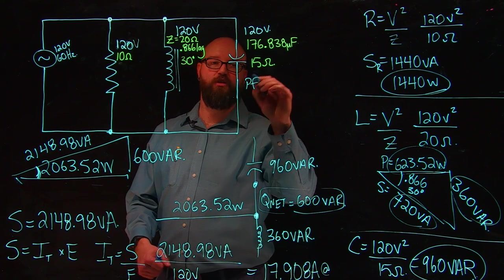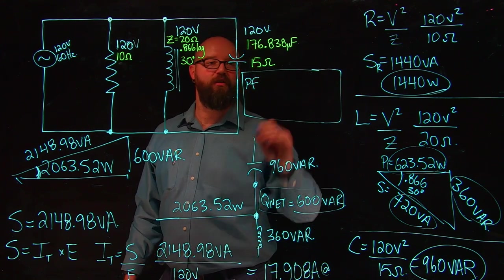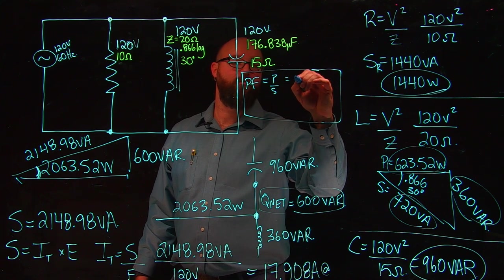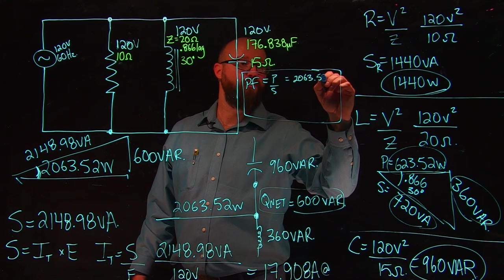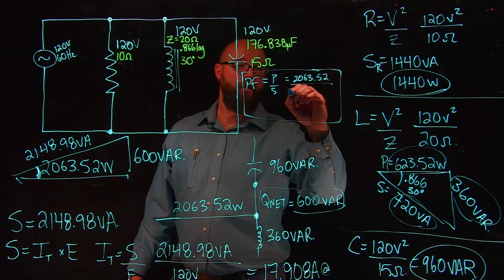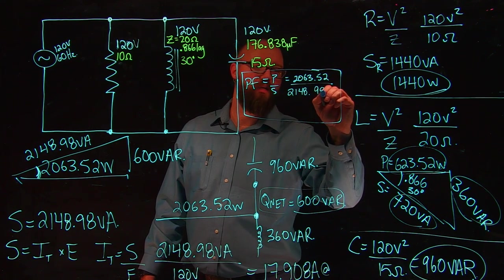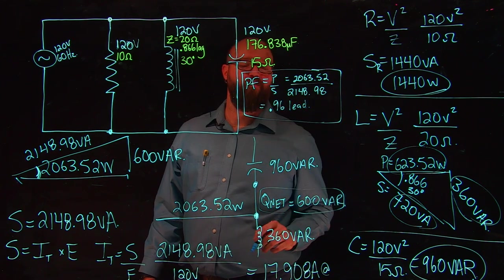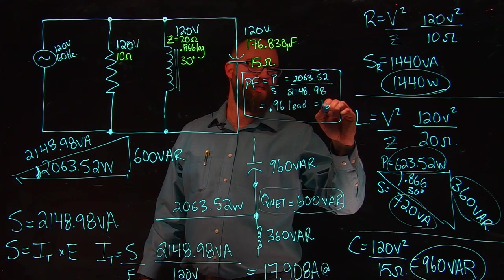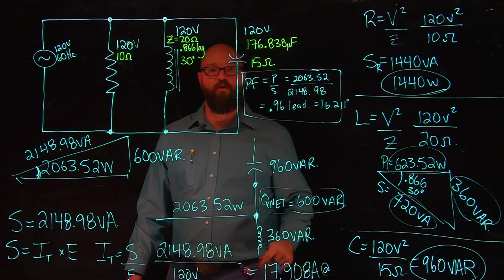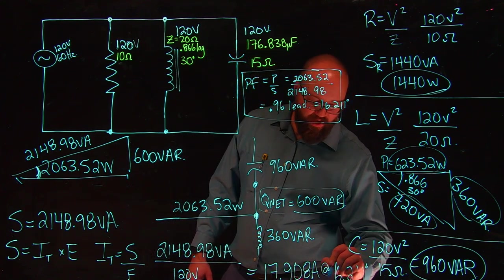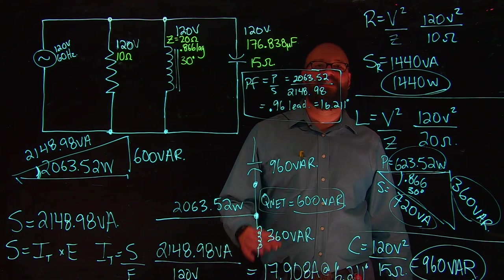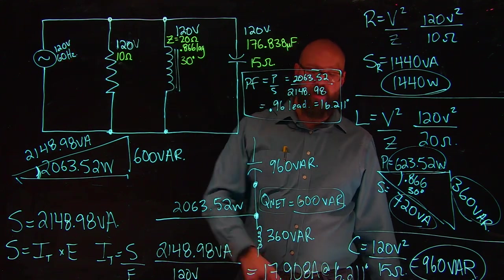If I take my power factor, it's getting pretty busy on here, is equal to power over apparent power. And in this case, we have 2063.52 divided by our apparent power of 2148.98. We end up with a power factor, similar to the previous video, of 0.96 leading, which if we arc cosine that, we should see an angle of 16.211 degrees. There we go. We've determined that if I'm thinking about my supply current or my line current, I know based off of this calculation that my supply current is leading my source voltage by 16.211 degrees.